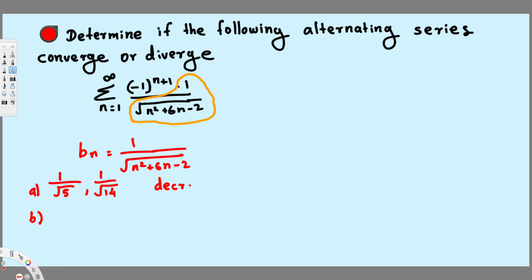And let's look at the second condition, that is the limit should be equal to 0. So if you take the limit of this one, limit as n goes to infinity, 1 over square root of n squared plus 6n minus 2. As you can see if it goes to infinity, the denominator is going to be infinity.